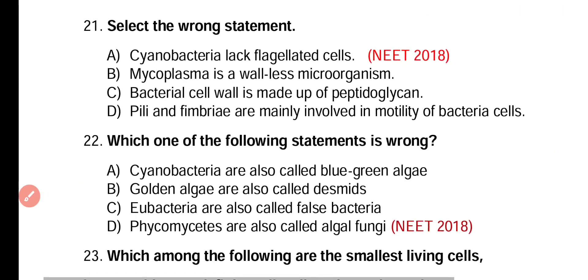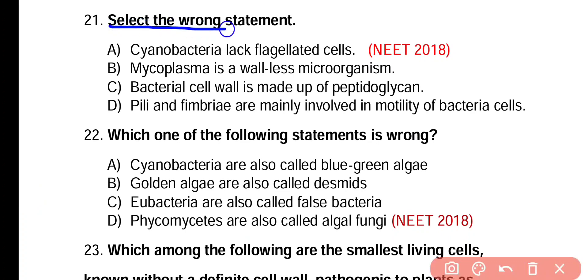Question number 21. Select the wrong statement. Cyanobacteria lack flagellated cells. Mycoplasma is a wall-less microorganism. Bacterial cell wall is made up of peptidoglycan. Pili and fimbriae are mainly involved in motility of bacterial cells. The wrong statement is option D — pili and fimbriae are mainly involved in bacterial attachment, not motility. Motility in bacteria is specific to flagella.